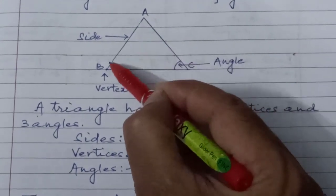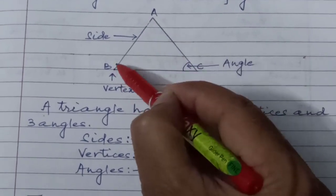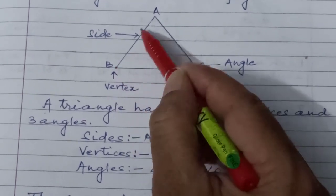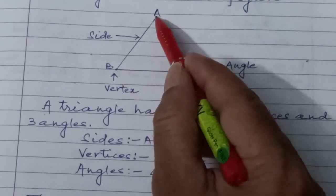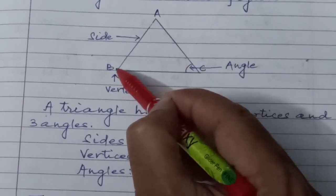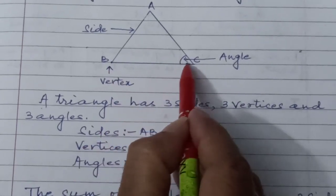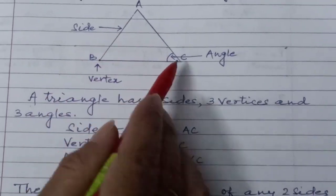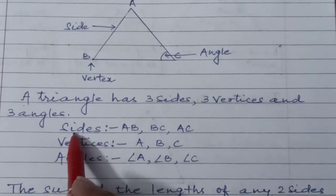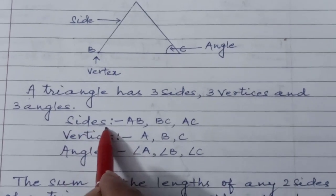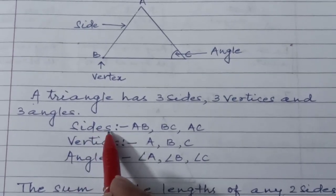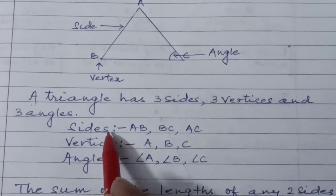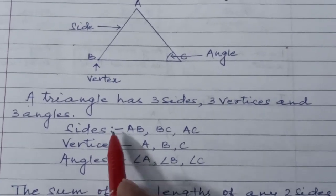The lines AB, BC, and AC are known as the sides, also called arms, of the triangle. Vertices is the plural form of vertex.